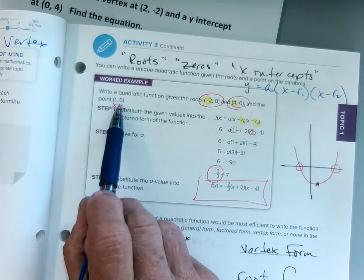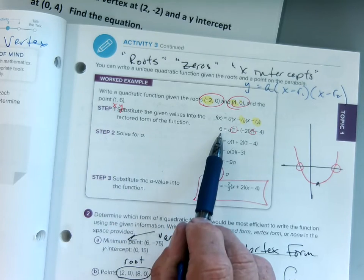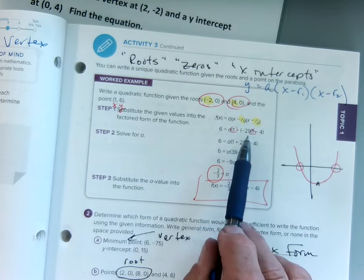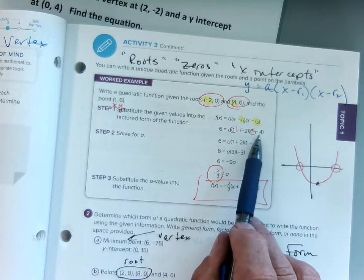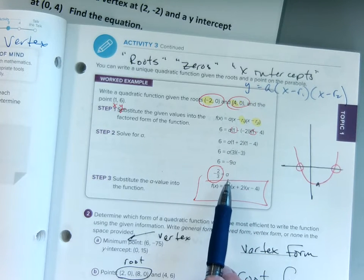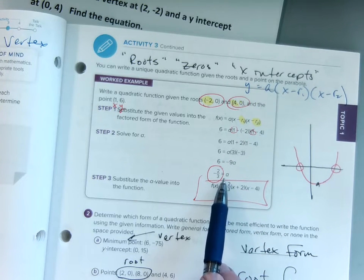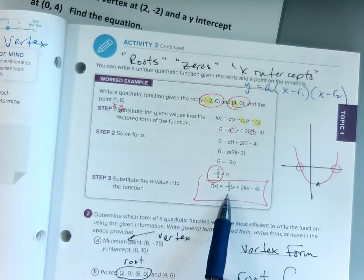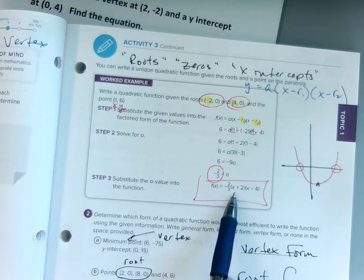So we take our (1, 6). Plug our 6 in for y. And our 1 in for both x's. And we finally simplify and we get a to be negative 2 thirds. Since the value of a is negative 2 thirds, we just put it in for the value of a. And we have (x plus 2), (x minus 4).